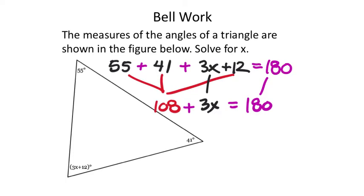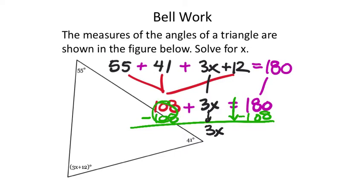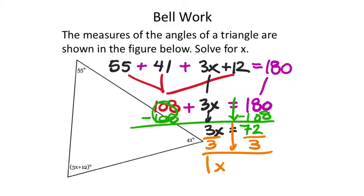To isolate 3x, I subtract 108 from both sides. That drops the 108, leaving 3x = 180 − 108, which comes out to 72. Last thing I need to do is make the coefficient of x equal to 1, so I divide both sides by 3. 72 divided by 3 gives me 24. So x = 24 is the value of x for this problem.